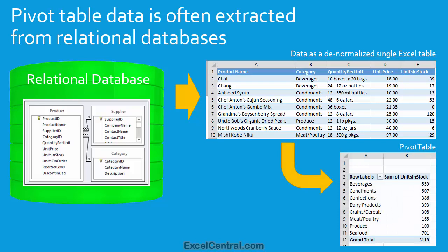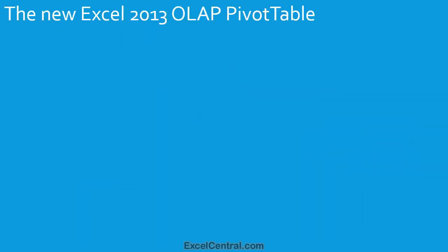Until Excel 2013 was released, the core Excel product, without add-ins, could only create a pivot table based upon a single Excel table or range. Now let's move on to the OLAP pivot table, which works in a different way. OLAP is an acronym for Online Analytical Processing, and it refers to the IT technology behind the pivot table. We'll talk more about that later in the session.